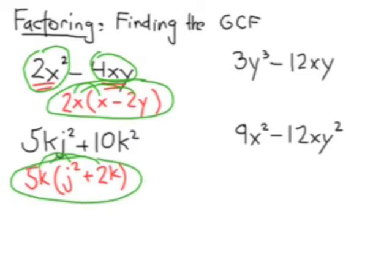Hit pause on this movie and you try the two examples on the right. Alright, let's take a look. On the outside here I could factor out a 3 and a y. On the inside that would be y² minus 4x. Hopefully you got that.